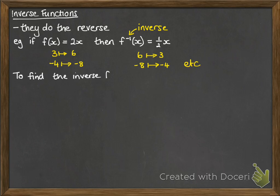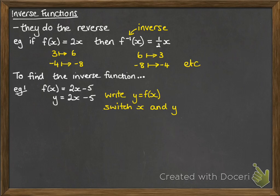To find the inverse function, we go through a process. We'll do it for this example where f(x) = 2x - 5. First, write y equal to your function: y = 2x - 5. Then you switch over the x and the y.